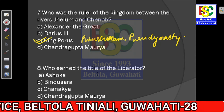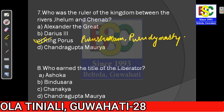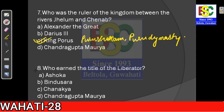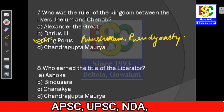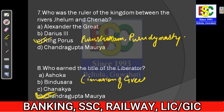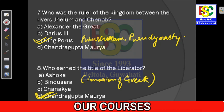Question number eight: Who earned the title of Liberator? This is one of the common questions which comes in government exams related to ancient history. The answer is option D — Chandragupta Maurya. He was known as the Liberator because he saved Indians from the Greek invasion. That is why he got the title of Liberator.